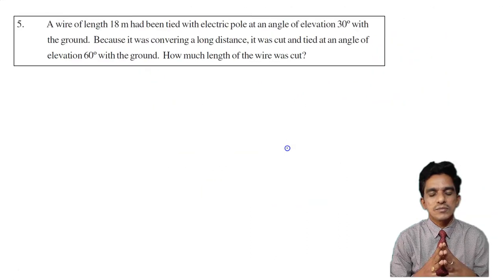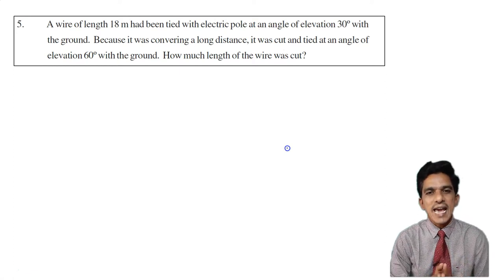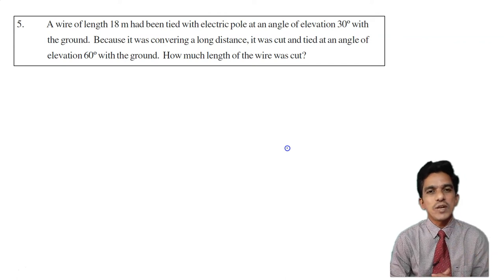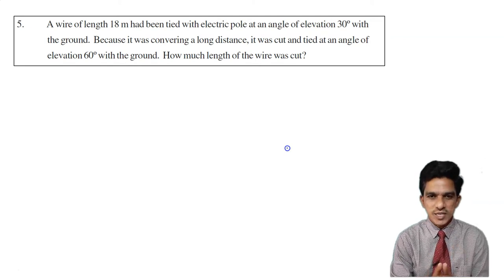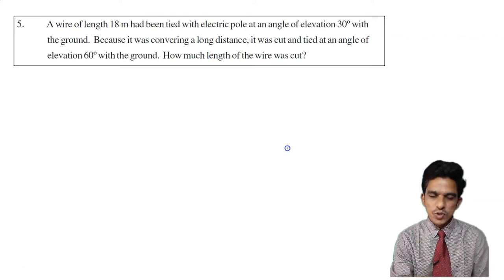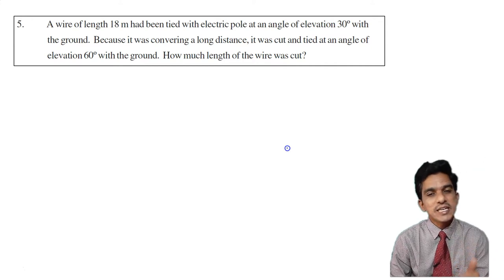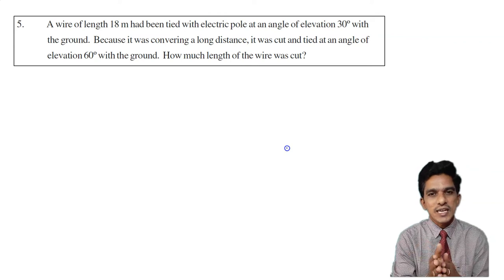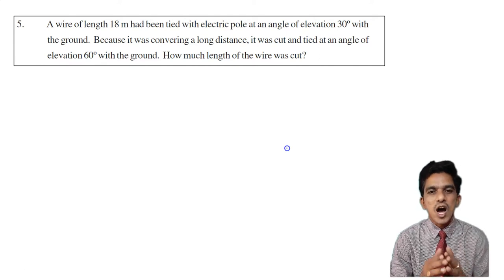Let us look at problem number 5. A wire of length 18 meters had been tied with an electric pole at an angle of elevation of 30 degrees with the ground. Because it was covering a long distance, it was cut and tied again at an angle of elevation of 60 degrees with the ground. The question is: how much length of the wire was cut?